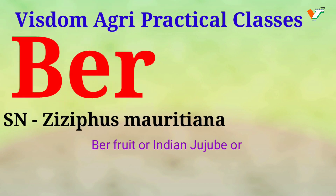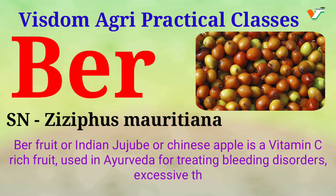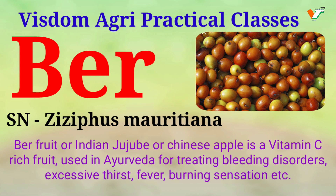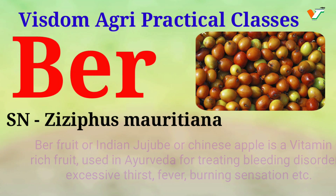Hi students, welcome back to Wisdom Classes. In today's class we will deal with burr. The scientific name of burr is Ziziphus mauritiana. Burr fruit, Indian jujube, and Chinese apple are the common names of burr. It is rich in vitamin C and is used in Ayurveda for treating bleeding disorders, excessive thirst, fever, and burning sensation.